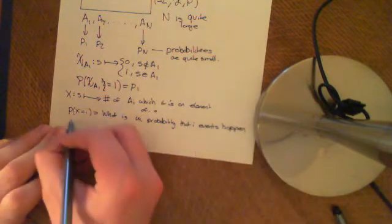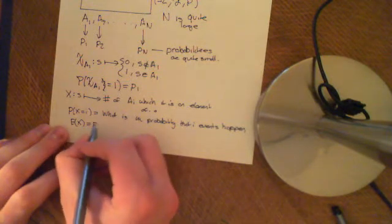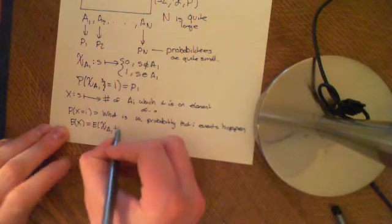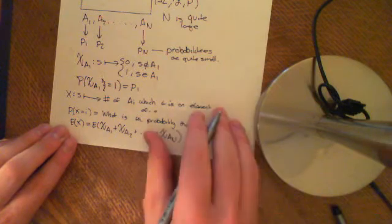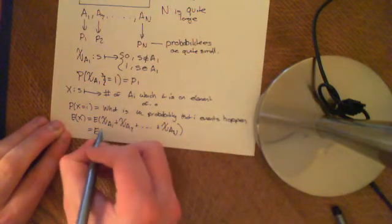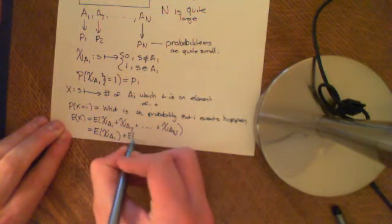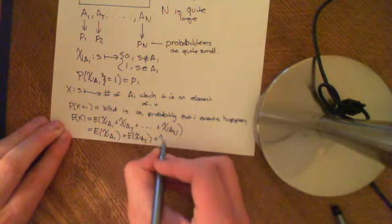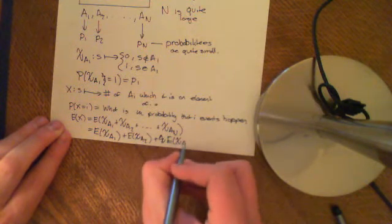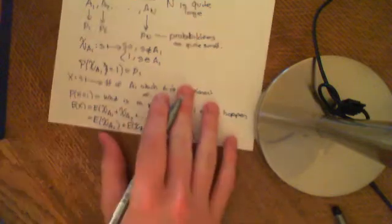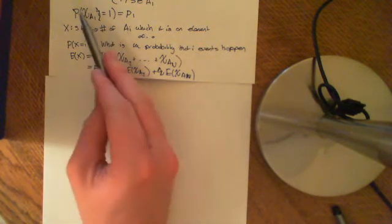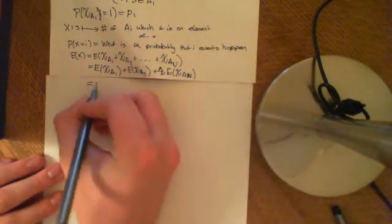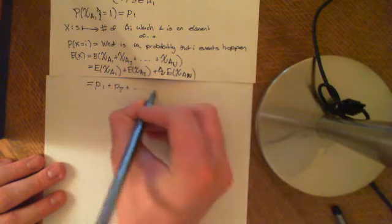Now, if we want to calculate the expected value of X, we know that is very easy, because X equals the sum of all of these indicator random variables: Indicator(A1) plus Indicator(A2) plus all the way along to Indicator(A_N). Because these are Bernoulli distributed, the expectation value is just the probability that the indicator random variable equals 1. So this becomes P1 plus P2 plus all the way up to P_N.